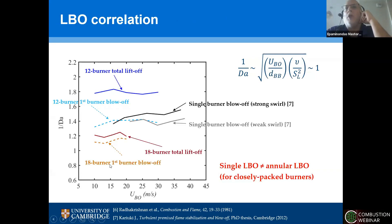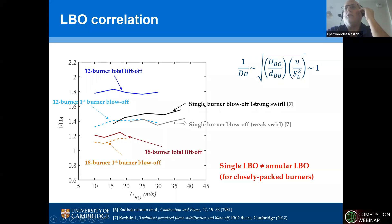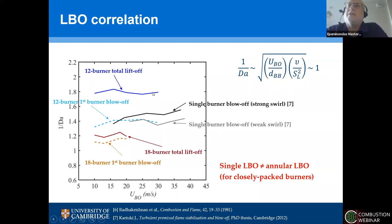If we try to correlate the blow-off of the interacting burner system, we see that — even with the same student, same lab, same air and fuel, more or less the same burner — there is no good correlation between the single-burner and the multiple-burner results, especially when the burners are closely packed. The single burner lean blow-off is not the same as in the annular rig. The message is: if you are a gas turbine engineer studying only a single flame, that doesn't necessarily tell you what will happen in your engine when neighboring flames are present.